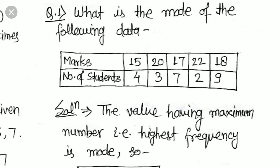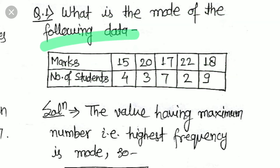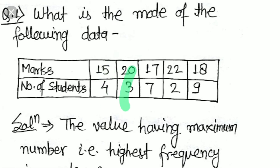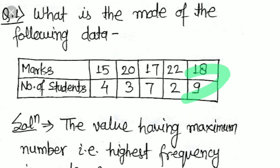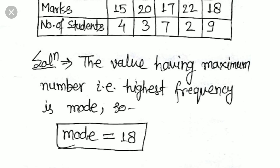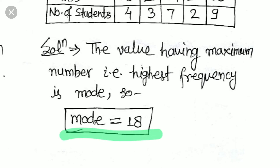Next, in the tabular form — if they give you a frequency distribution table and ask for the mode — for example: what is the mode of the following data showing marks obtained by students with frequencies 15, 4, 23, 17, 7, 22, 2, 18, 9? The frequency represents how many times a value appears, so you just find the largest frequency. The largest frequency is 9, which corresponds to the value 18, so the mode is 18.